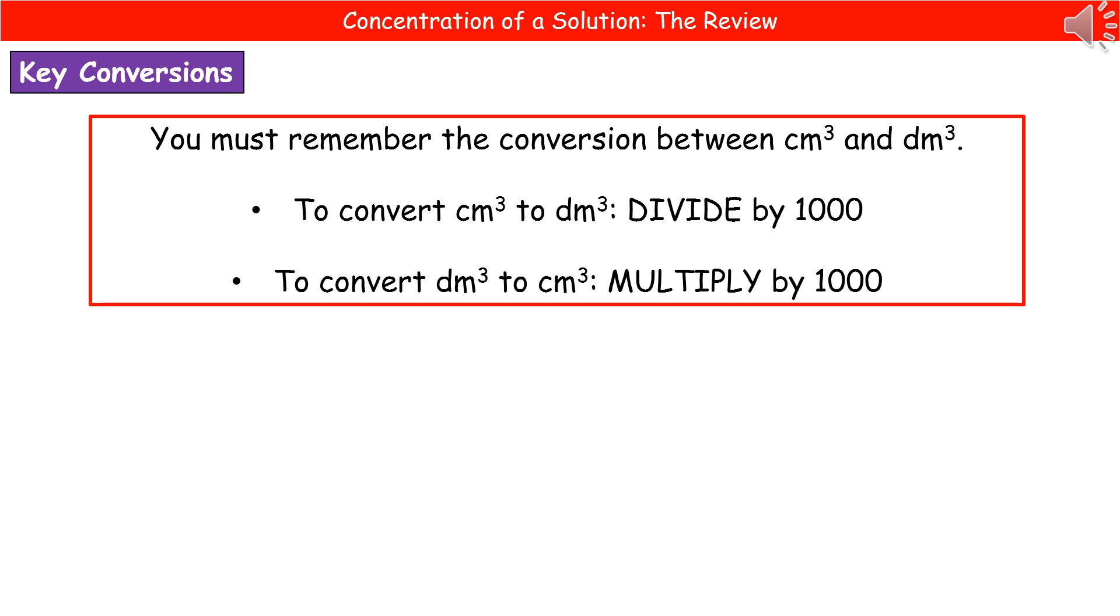They're going to give you some of the actual values in the question in centimeters cubed, and they want you to work out an answer using decimeters cubed. So to convert centimeters cubed to decimeters cubed, we divide by 1,000. If you ever needed to convert decimeters cubed to centimeters cubed, you multiply by 1,000.